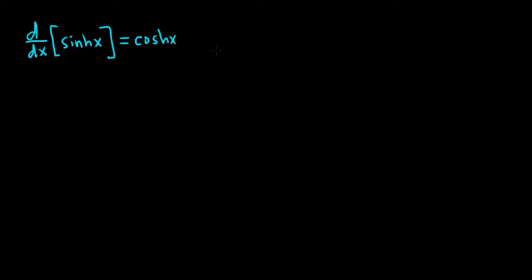This means that if you integrate both sides of this equation, you'd be integrating cosine on the right-hand side. When you integrate the left-hand side, the derivative goes away, so you just get hyperbolic sine. So when you integrate the hyperbolic cosine, you just get the hyperbolic sine plus some arbitrary constant.